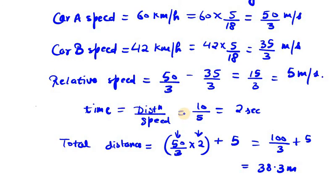So time taken during the overtake is 2 seconds and the total distance traveled during the overtake is 38.3 meters. So that's your answer for question number 20. Thank you for watching this.